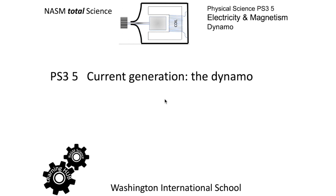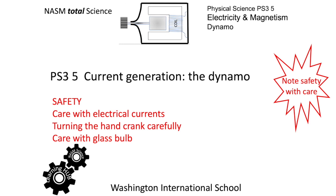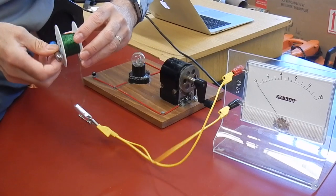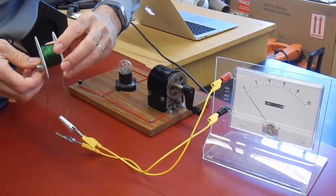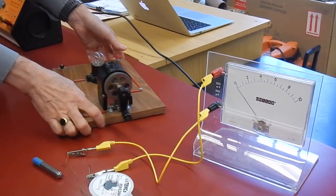We're going to look at a dynamo which produces current. As always, we're going to be careful with the experiment. Current with rotation means that you can make one of these.